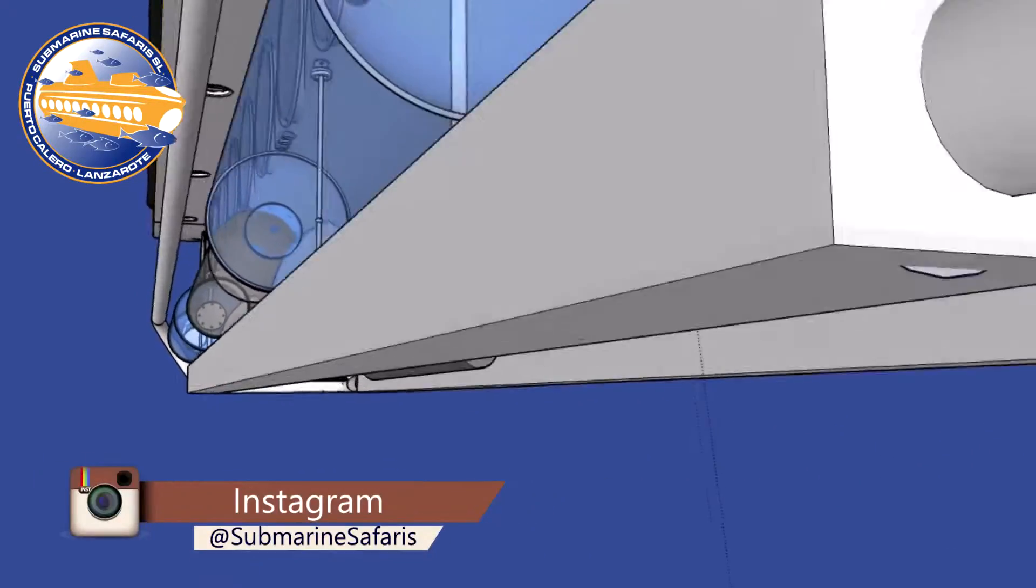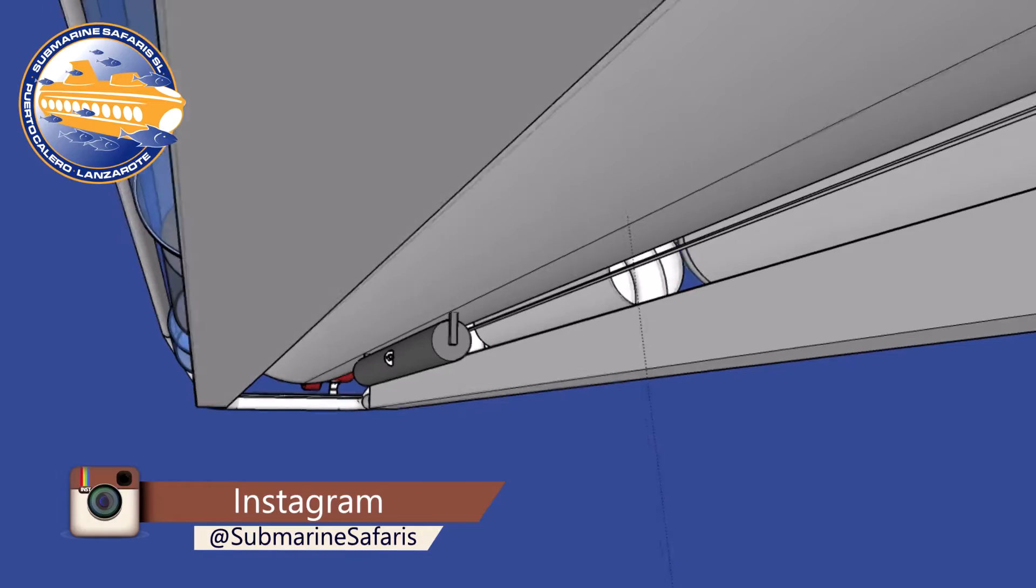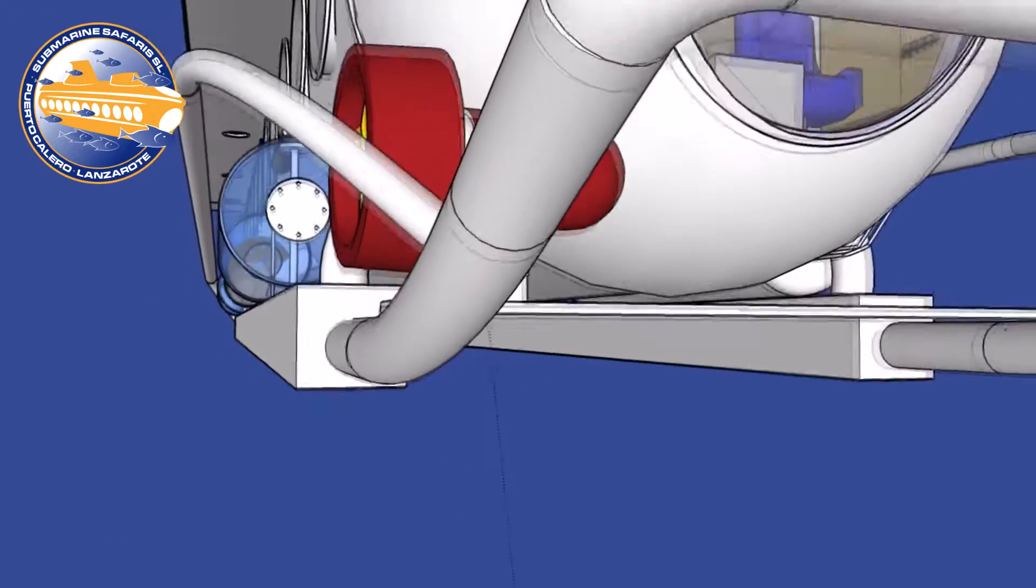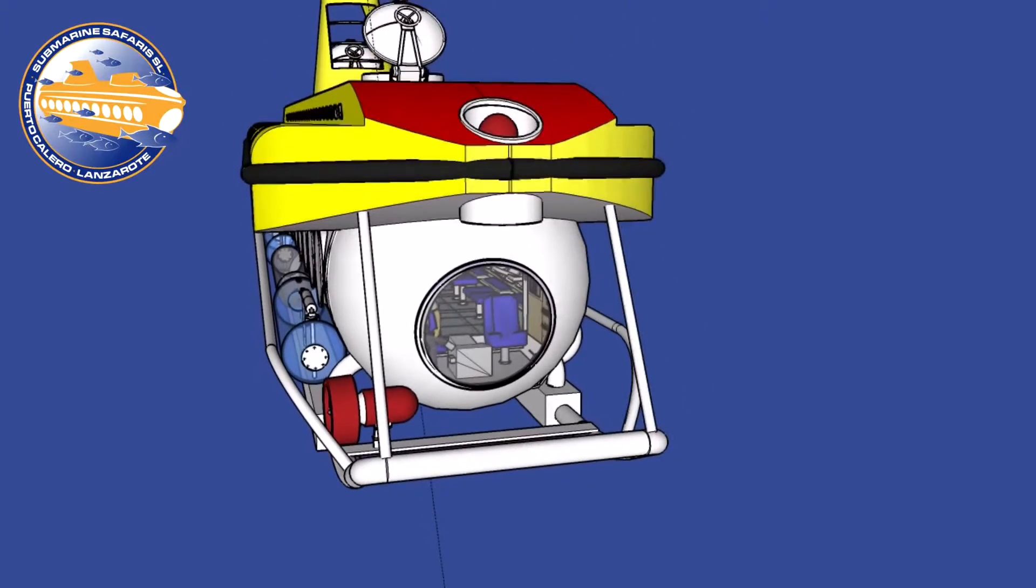Underneath the submarine is an emergency drop weight. This is made from solid steel and weighs 1850 kilograms. In the event of an emergency, the pilot can drop this weight to bring the submarine to the surface.